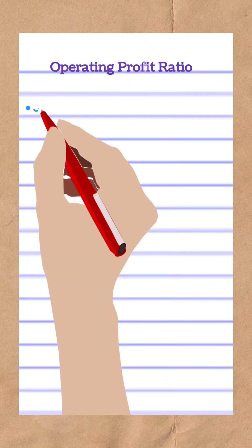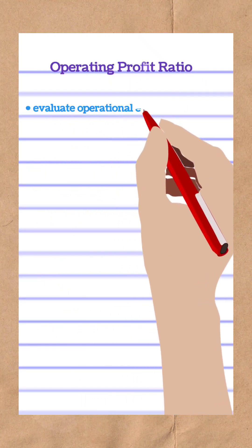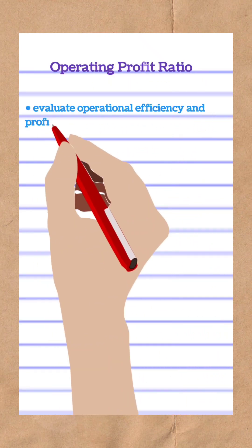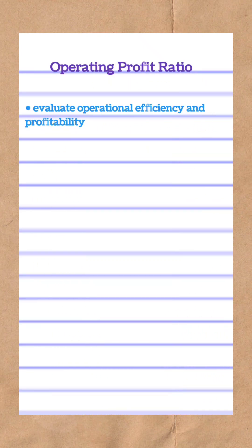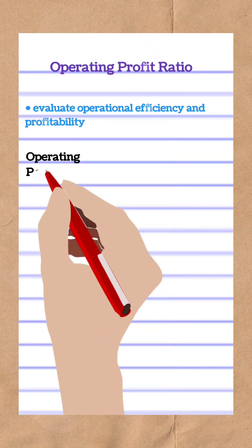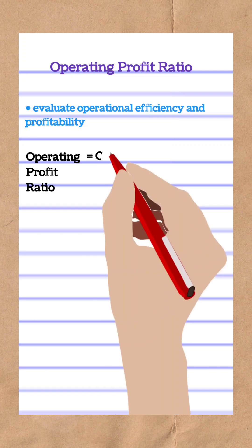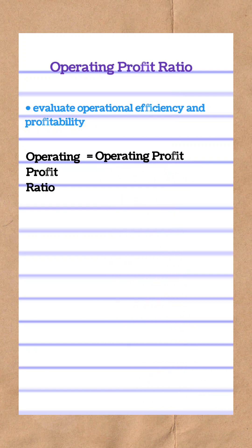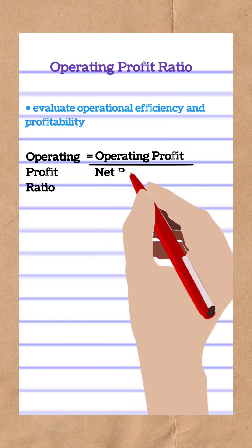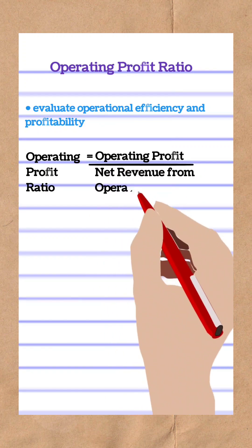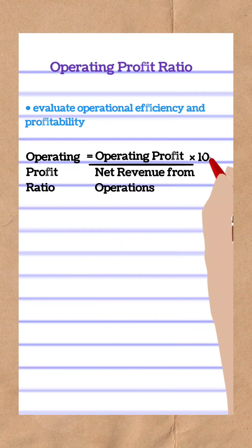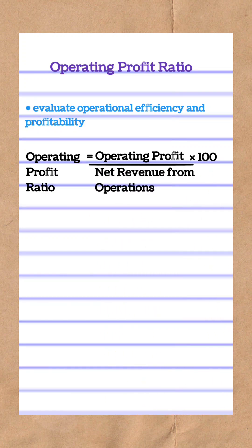Operating profit ratio measures the operational efficiency and profitability of the business. Its formula is operating profit divided by net revenue from operations, multiplied by 100.